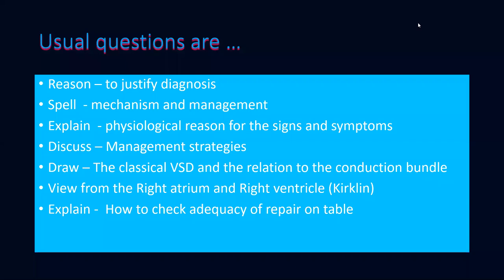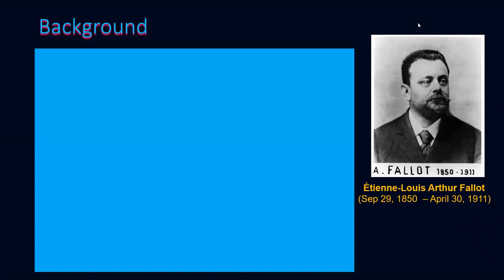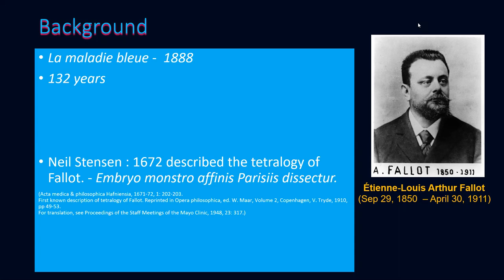Tetralogy of Fallot was described in detail — both clinical features and physiology — by Etienne-Louis Fallot in his manuscript 'La Maladie Bleue' in 1888. It's 132 years and we're still discussing Tetralogy of Fallot in great detail. However, the anatomical description is attributed to Niels Stensen, way back in 1672. I have given references as small bullet points below the text so you can go back and read more about these points.